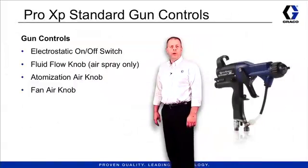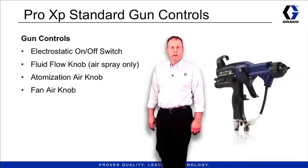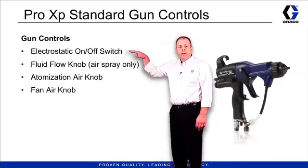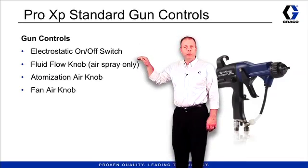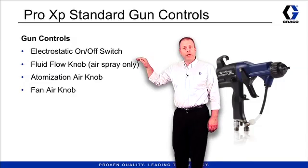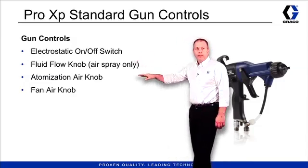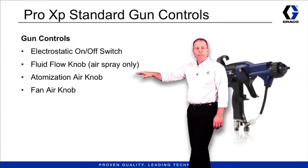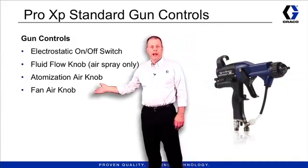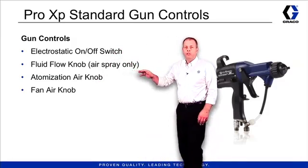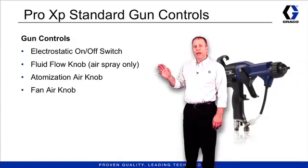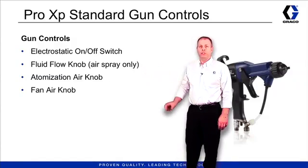The Pro XP standard gun has four controls we want to talk about. First, the electrostatic on-off knob, then we have the fluid control knob (that's the air spray gun only), the atomizing air knob, and then the fan air knob. Those are the four controls on the gun. Let's take a closer look at the gun itself and look at the locations of these four knobs.